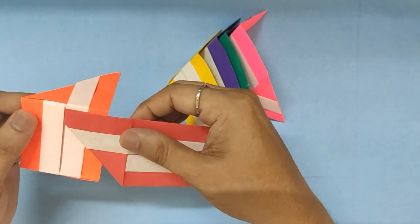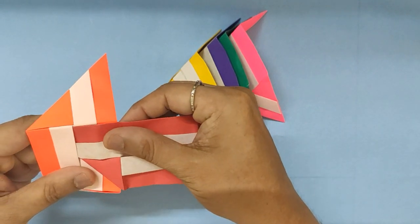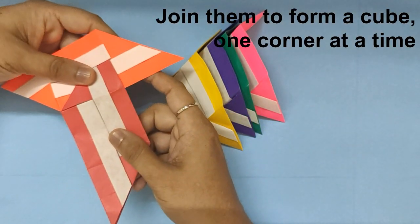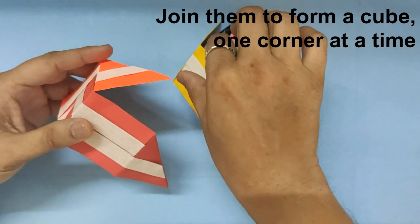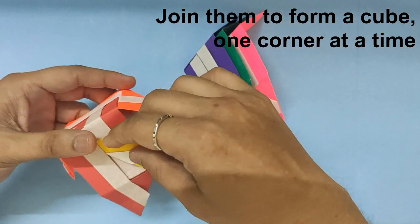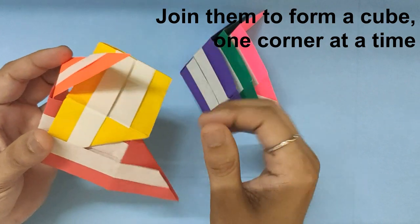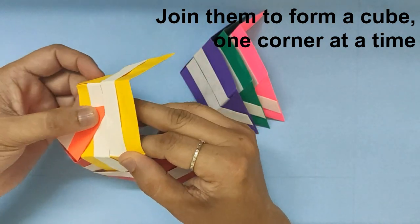The points go into the gaps. First form a T with two units. Then the third one you form a corner of a box.